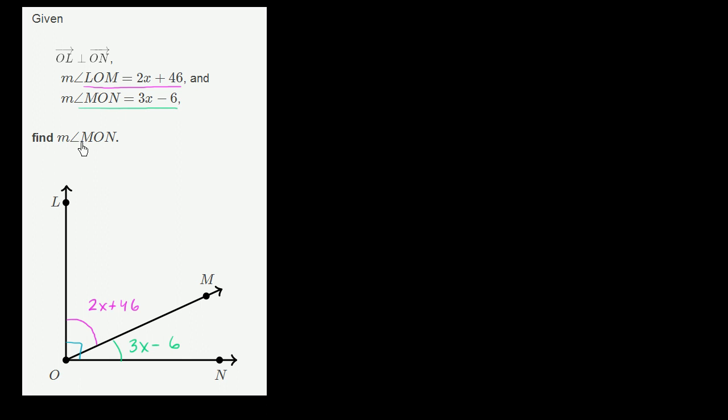They ask us to find angle MON. We need to find this angle right over here, and we'd be able to find it if we knew what x is. Now the one thing that we know is that if we add up these two angles, these are adjacent angles, and their outside rays form a right angle. So these two angles are going to add up to 90 degrees, and I guess we can assume here that we're dealing in degrees.